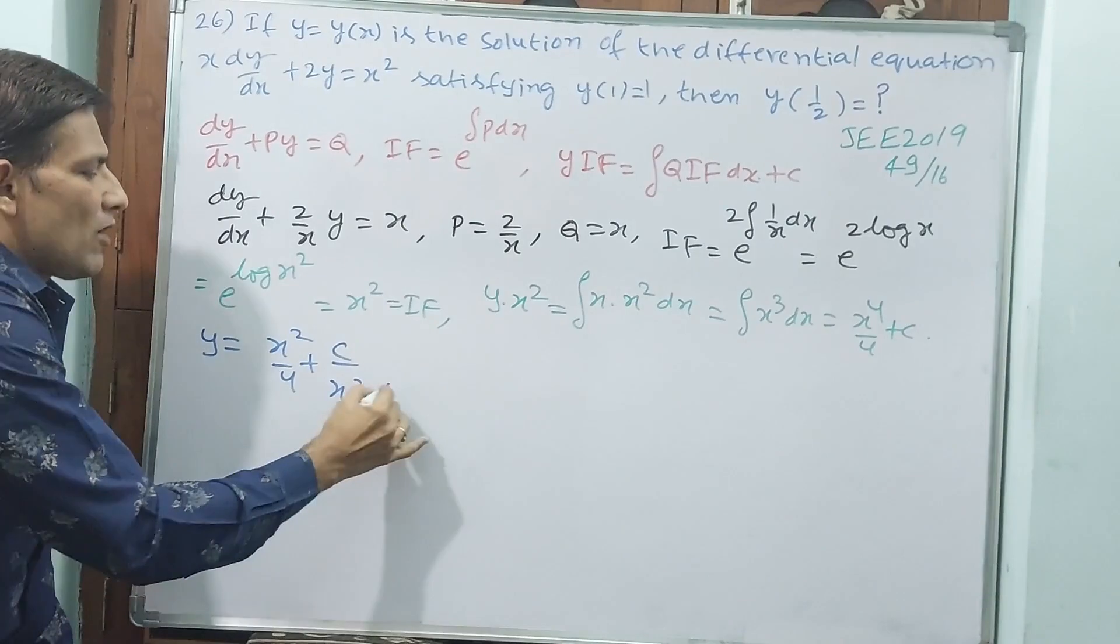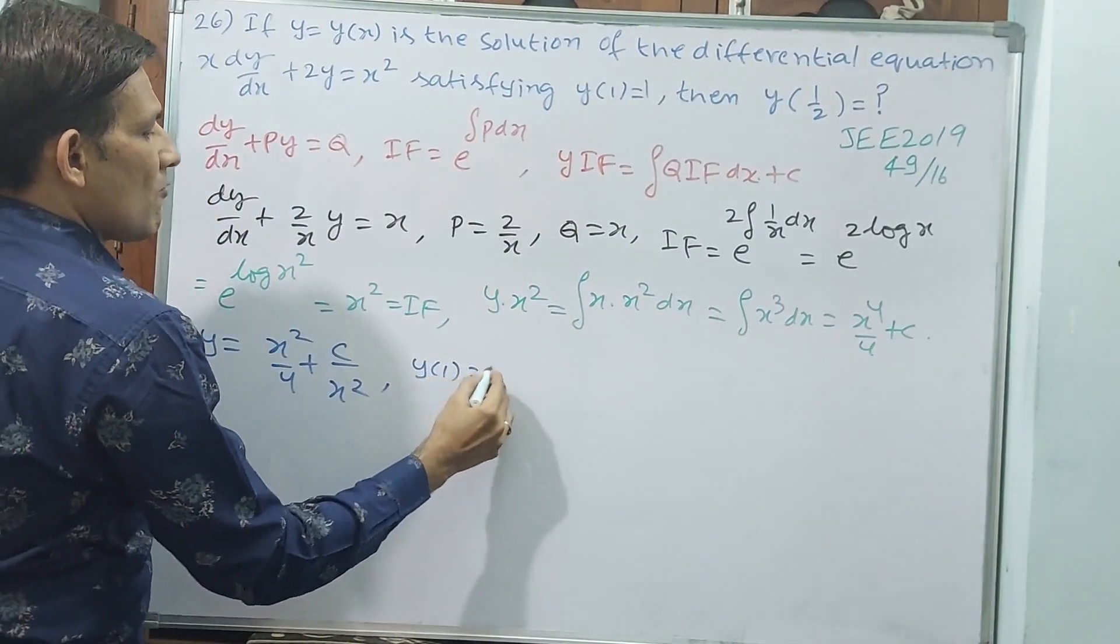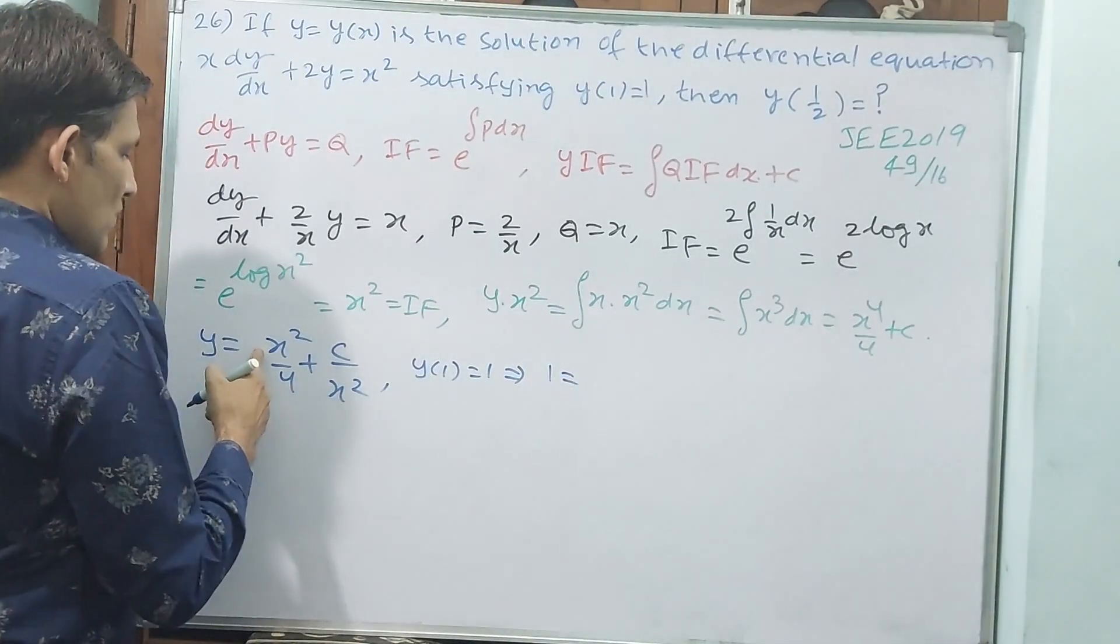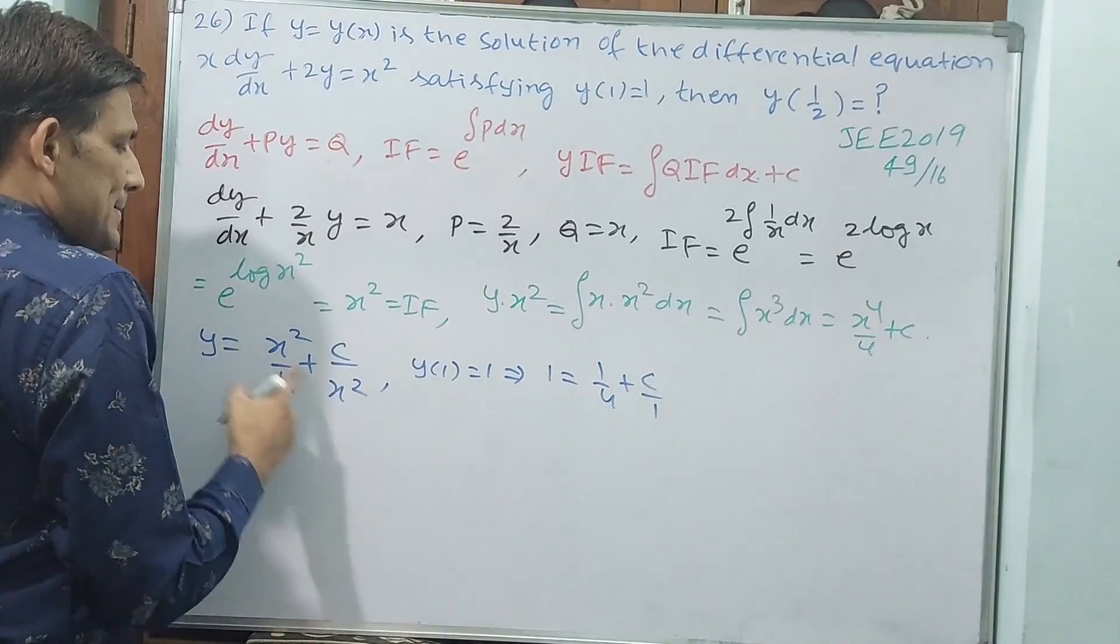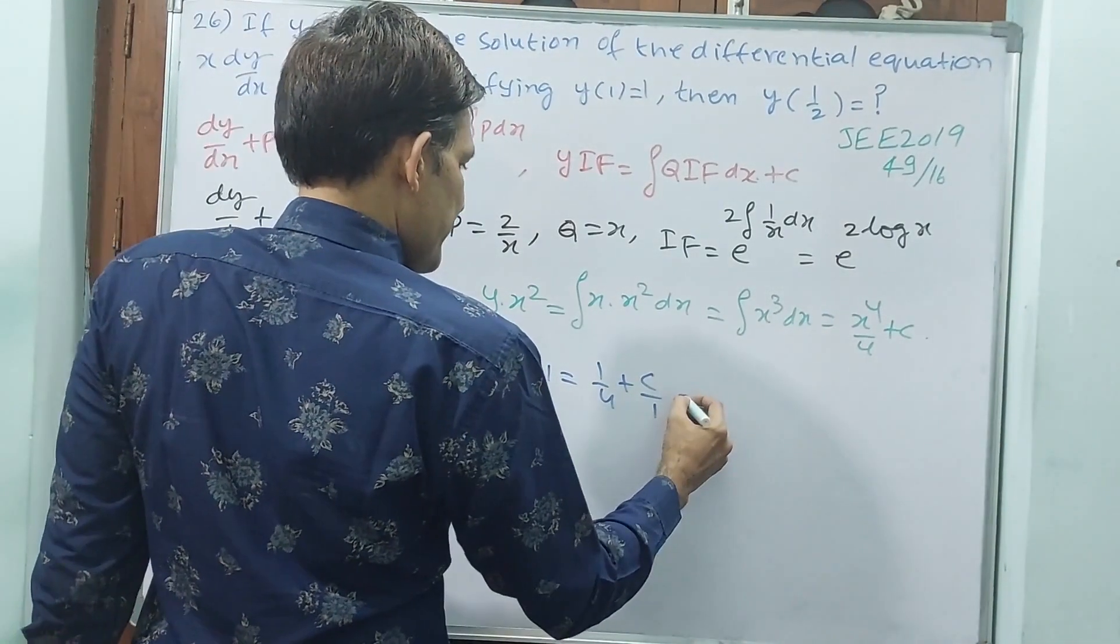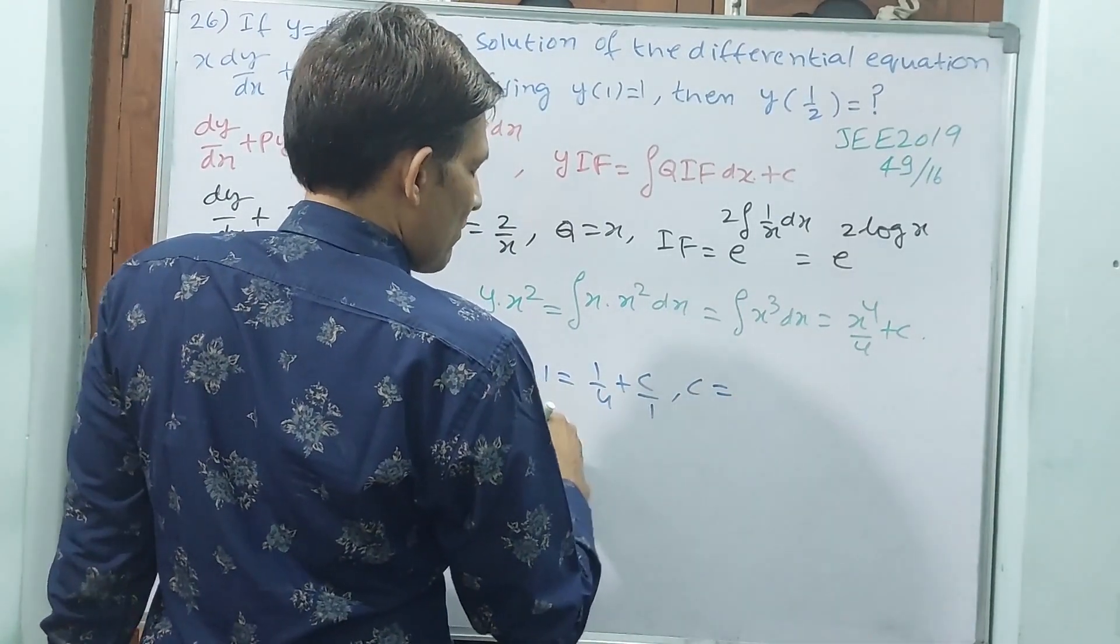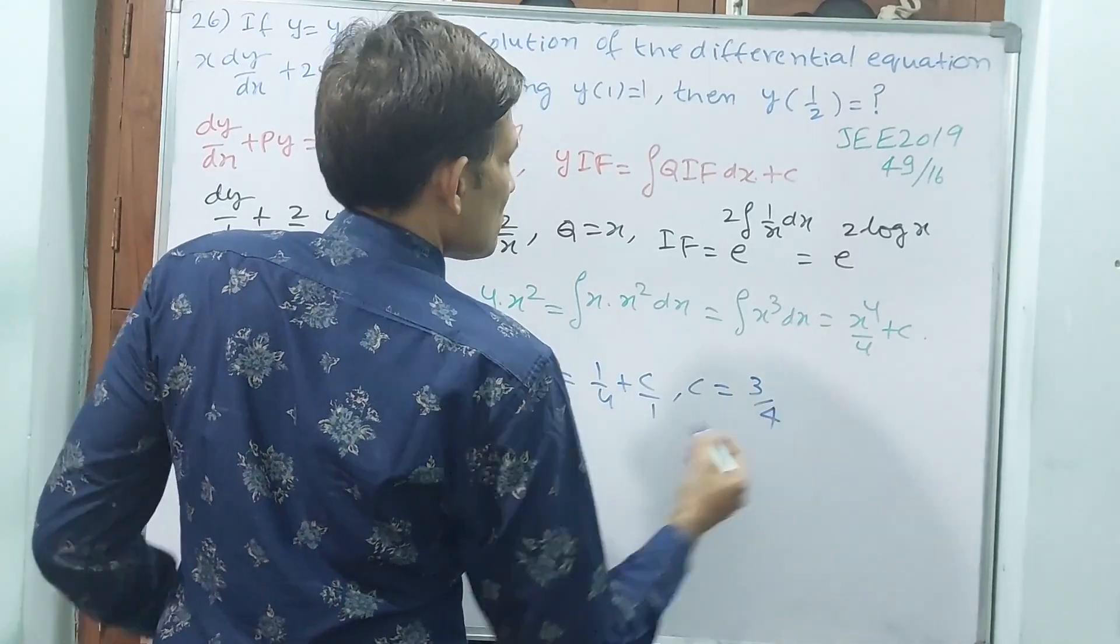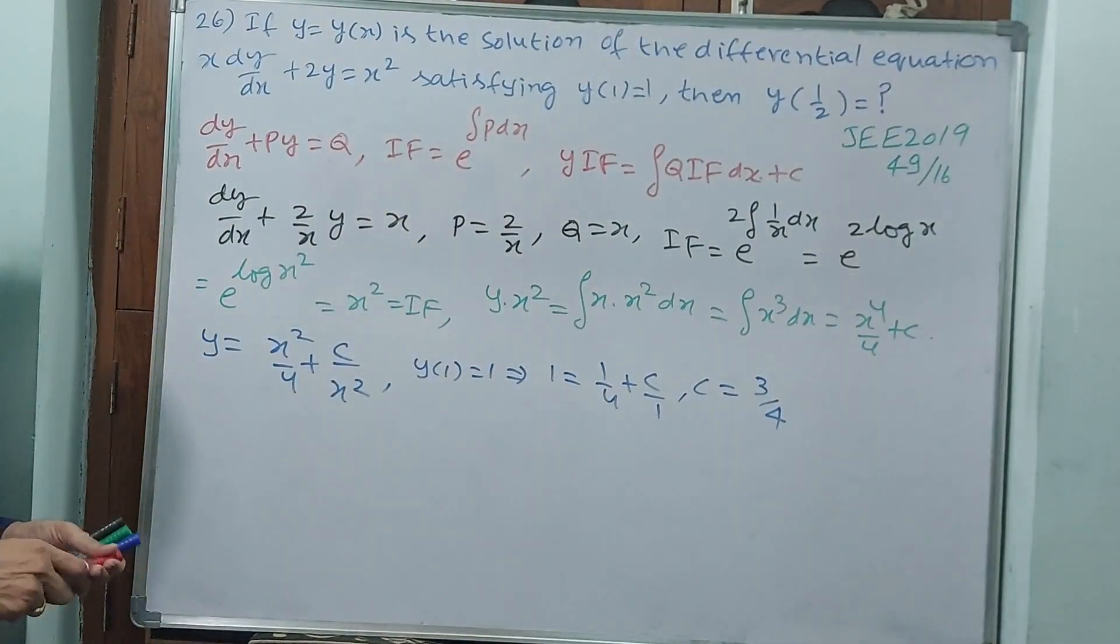Then you have to find c. How do you have to find? y of 1 equals 1 implies 1 equals 1 by 4 plus c by 1. So c equals 1 minus 1 by 4, which is 4 minus 1, 3 by 4. 1 minus 1 by 4 means 3 by 4.